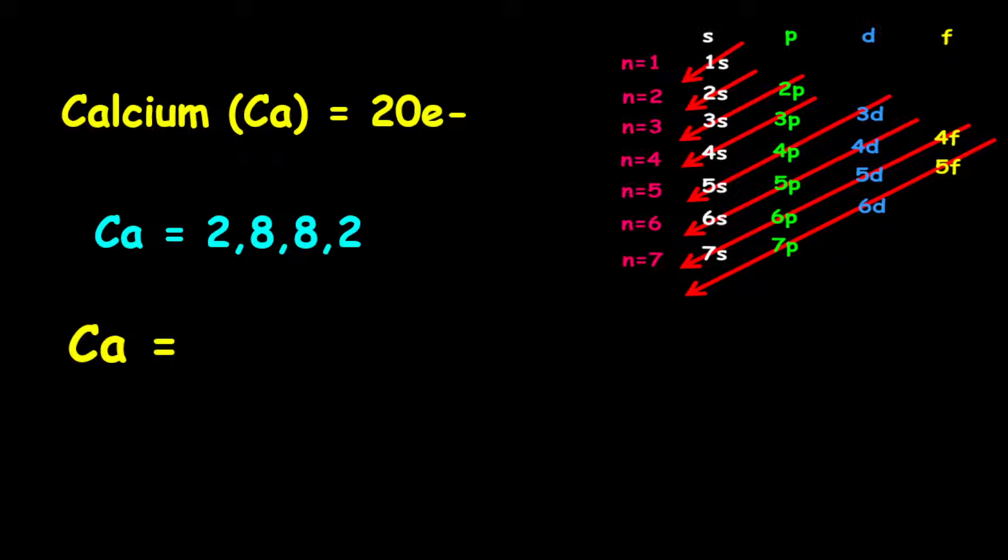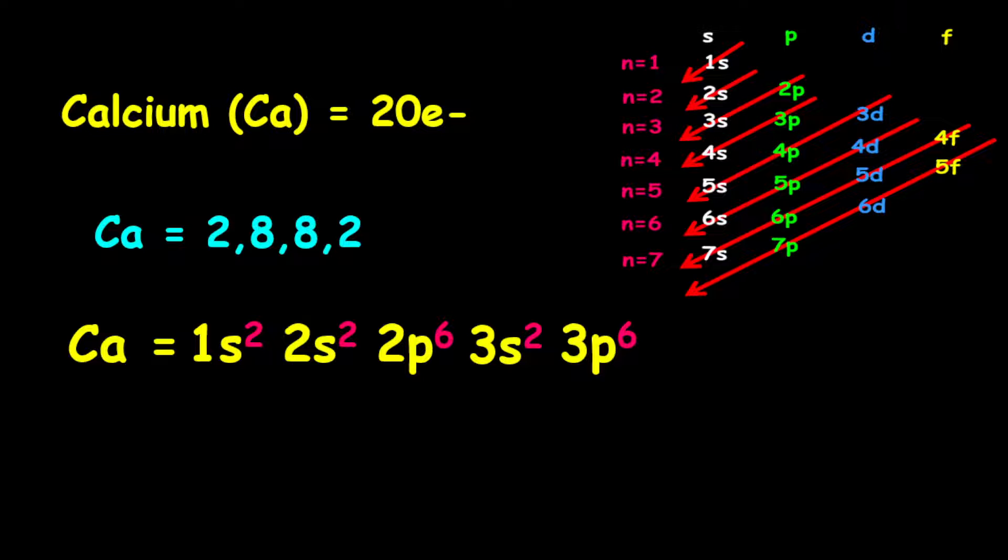For the orbital filling electron configuration, it is given as 1s², followed by 2s², then 2p⁶, followed by 3s², then we have 3p⁶, and then we have 4s².